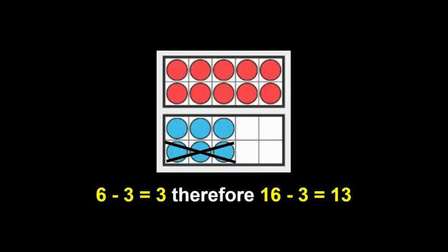Now we're going to go back to some pictures — you will see 10 frames again. How many dots do you see and how do you see them? How many did you see? Take away three. How many were there? I'll let you see it one more time. Subtract three — take away three of the dots. How many will be left? You're right — 13. Almost every young child I talk to says: six take away three is three, so 16 take away three is 13. You don't have to count backwards — you just know.